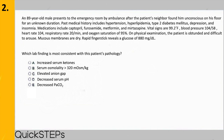Past medical history includes hypertension, hyperlipidemia, type 2 diabetes mellitus, depression, and insomnia. Medications include captopril, furosemide, metformin, and mirtazapine. Vital signs: 99.2°F, blood pressure 104/58, heart rate 104, respiratory rate 20, oxygen saturation 95%. On physical examination the patient is obtunded and difficult to arouse; mucous membranes are dry. Rapid finger stick reveals a glucose of 880 mg/dL. Which lab finding is most consistent with this patient's pathology? A) increased serum ketones; B) serum osmolality greater than 320 mOsm/kg; C) elevated anion gap; D) decreased serum pH; or E) decreased PaCO2.